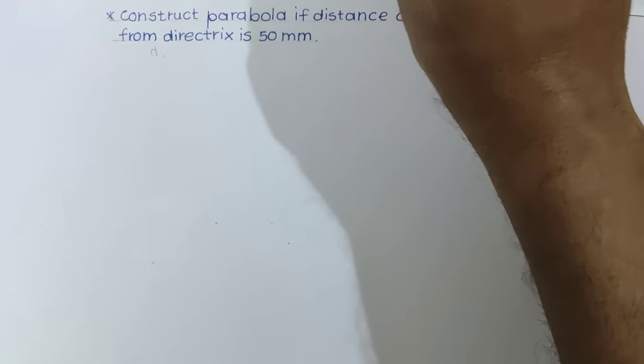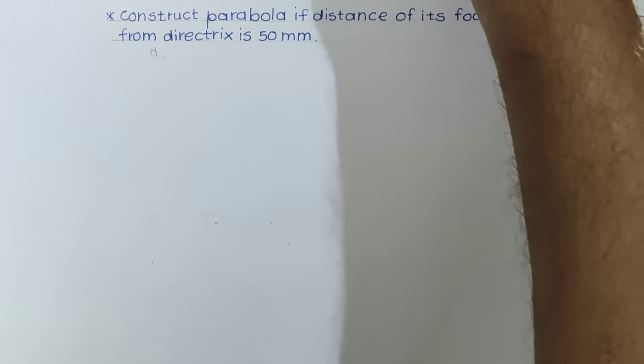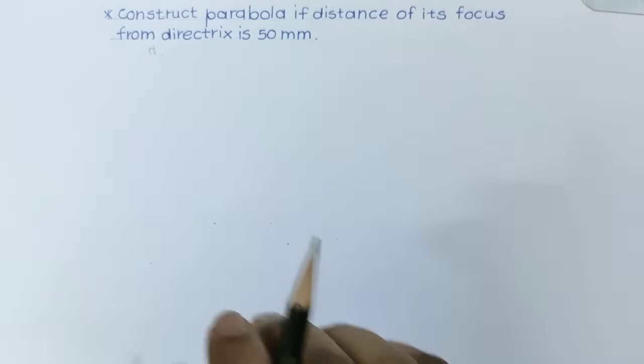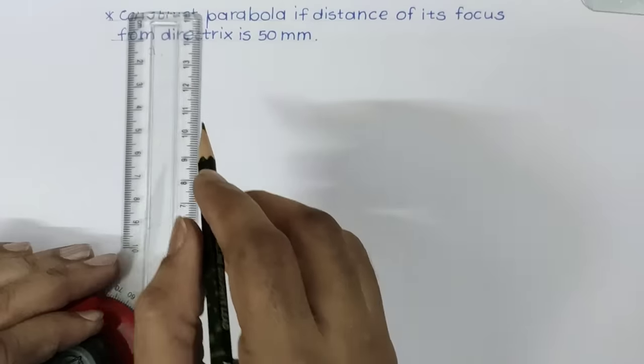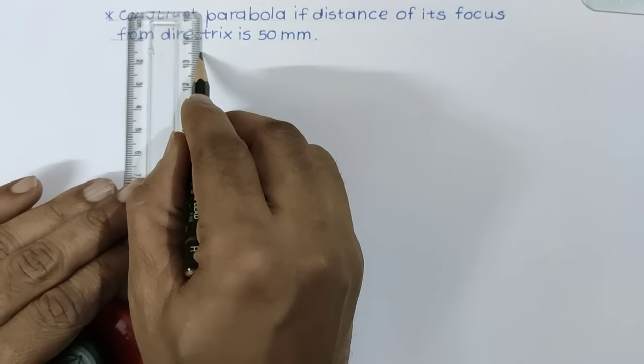Here eccentricity is not given, need not to be given because eccentricity for parabola is always one. First of all, draw one fixed vertical line, which is the directrix for parabola.